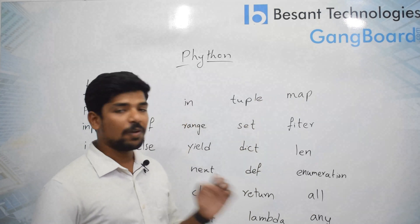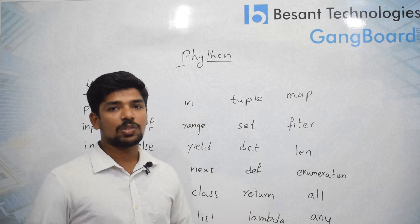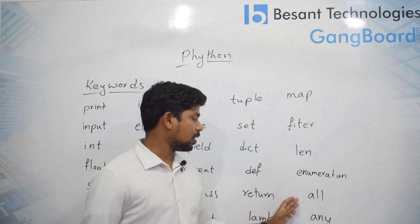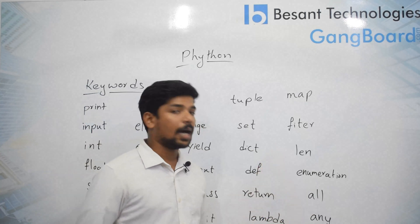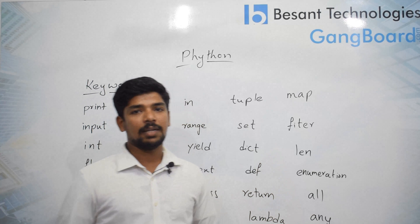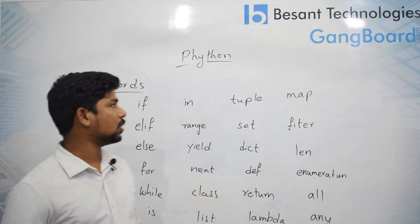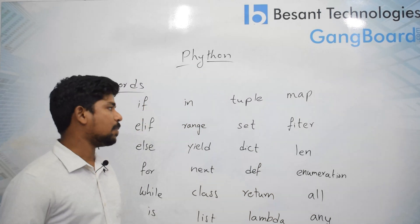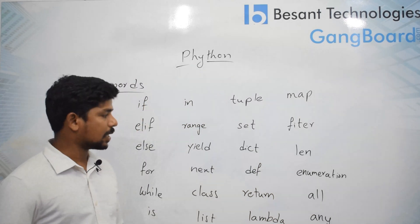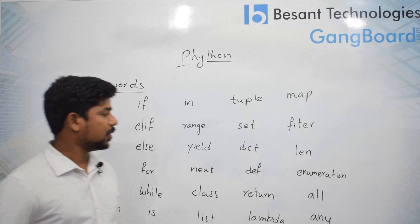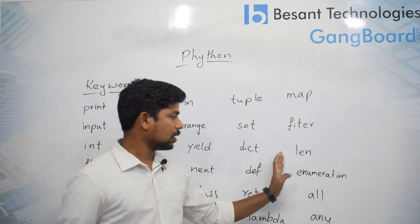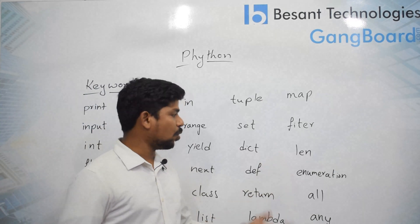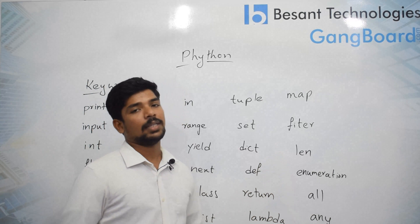'len', 'enumerate', and other extra keywords are used along with the tuple, because a tuple can't be altered but can be visualized using these keywords. Even more keywords are there which are not listed on the board.